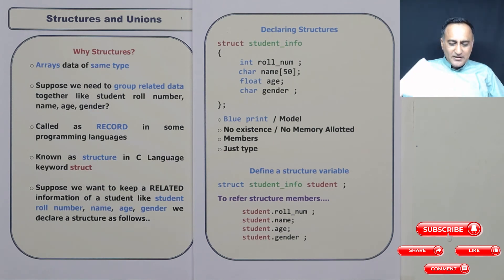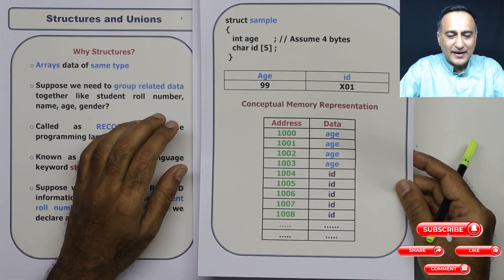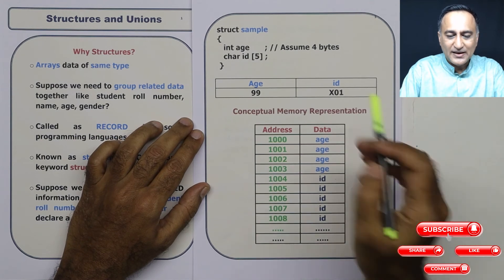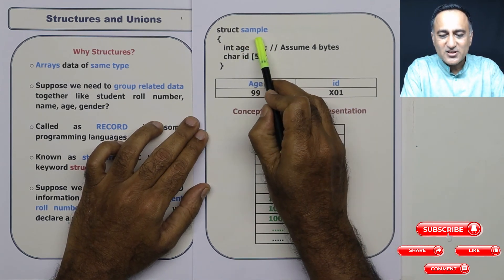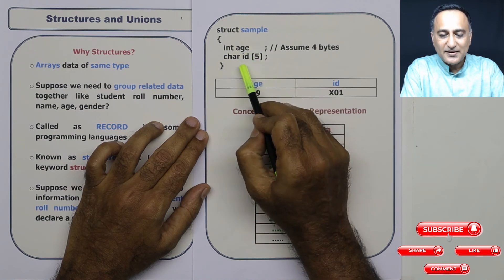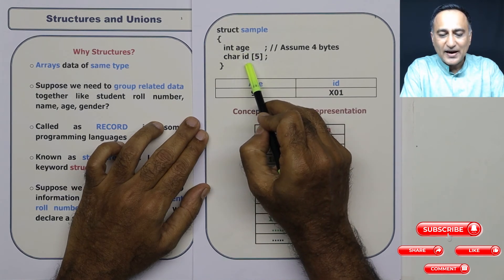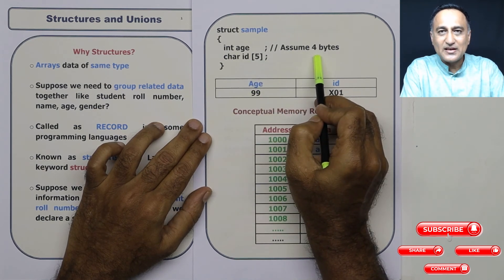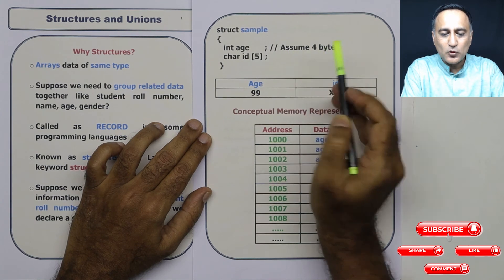Now, to further enhance your conceptual clarity, let's take a look at a diagram here. This is going to really help you understand things a little better. Let's say I have declared a structure called as sample. It has age as one of the members and it has got character ID with the width five. Let us assume for convenience, the width of age is four bytes.